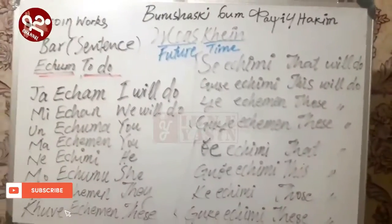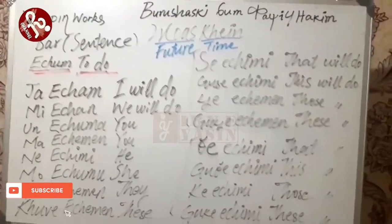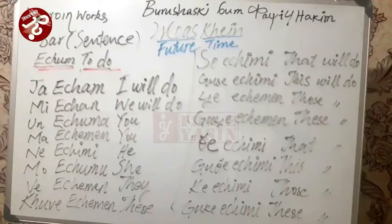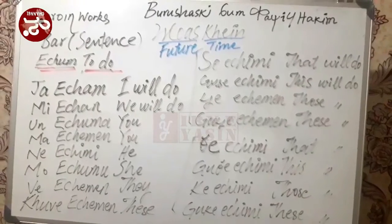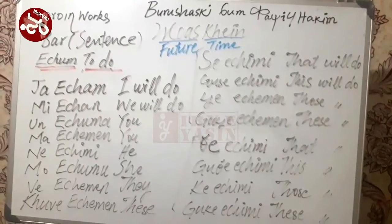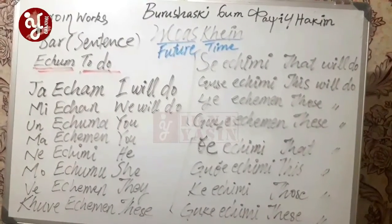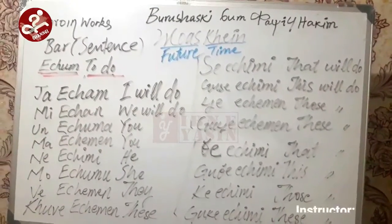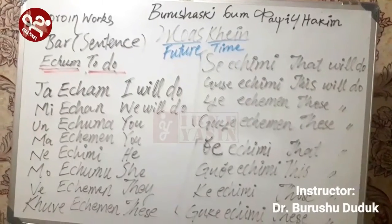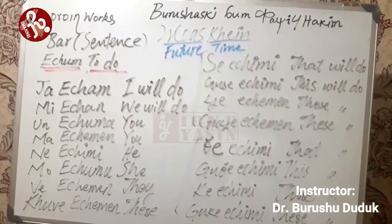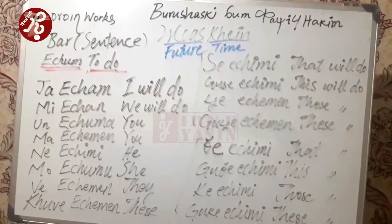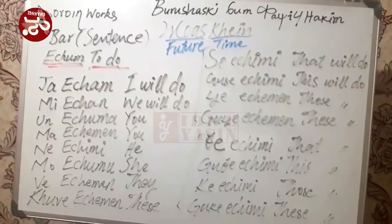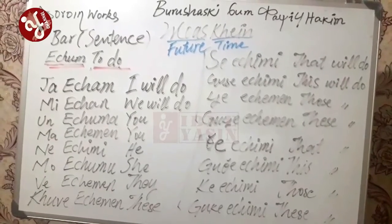Welcome friends. This is Chapter 6, Lesson 4 of Bodhisattva tenses. We are learning the tenses. We have discussed the present tense and the past tense, and today we are discussing the future tense.